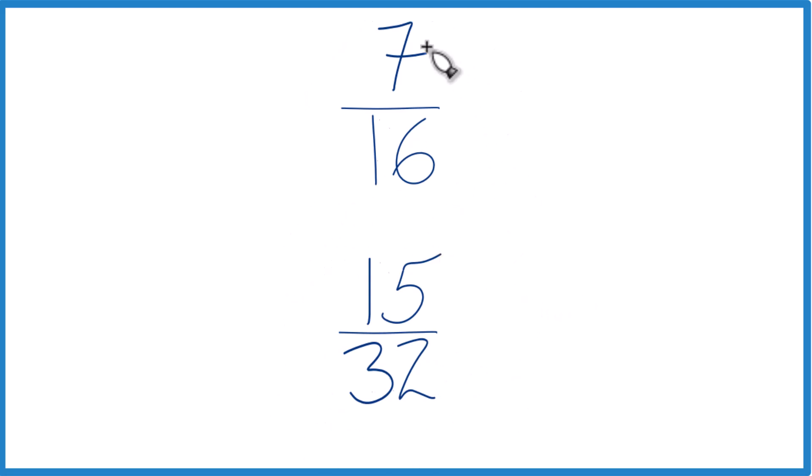So one way, you could just divide 7 by 16 on a calculator, get a decimal, divide 15 by 32, get a decimal, and just compare the decimals. And that would tell you whether 7/16 is greater than, equal to, or less than 15/32.